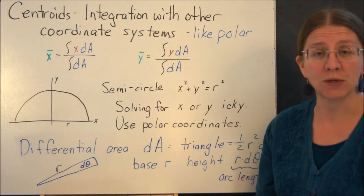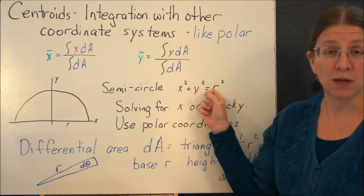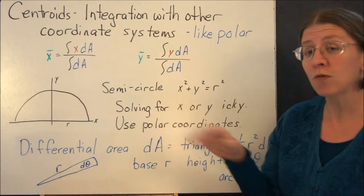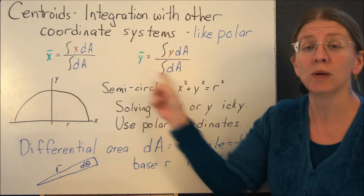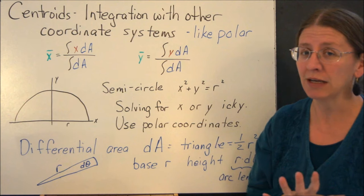what if we wanted to find the centroid of the semicircle? We know that the semicircle is x squared plus y squared equals r squared, but solving for either x or y to go into these formulas is not something I would care to do. I don't like integrating square roots and things.